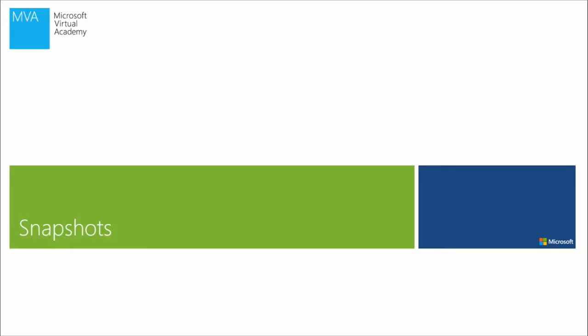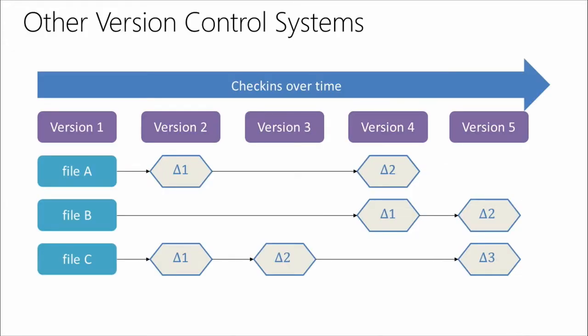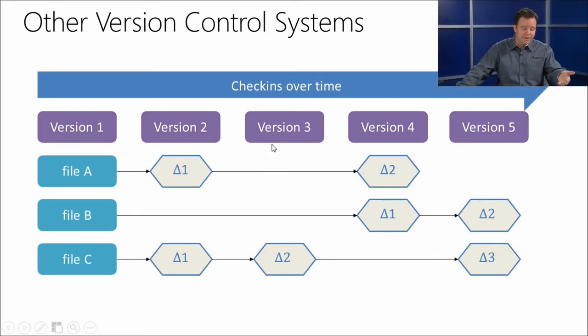Git Fundamentals — it's a different animal than other version control systems and we have to discover why. Let's head back to the slides and the first thing we're going to cover is snapshots. Git is different. In historical centralized version control systems, what you find is that over time there are all of these check-ins. If you look at the slide, you see version one, version two, version three, version four — we're incrementing versions as we go. On the left-hand side we've got files A, B, and C, and on our first commit, there they are.